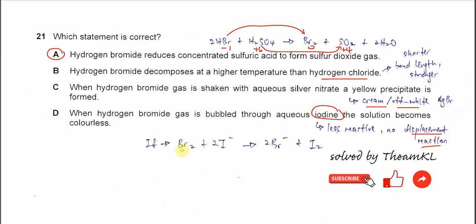If we put bromine with iodide, yes, it will react. The bromine will reduce to bromide, iodide will oxidize to iodine, because bromine is more reactive and can displace the iodine from iodide.